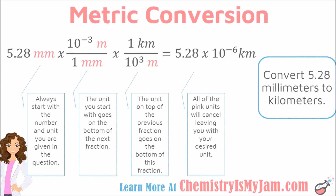So I'm going to go another step. Whenever I set up a new fraction, whatever unit I have at the top of the previous fraction is going on the bottom of my current fraction — that way that unit will cancel. So I had meters here, I've put meters here, and I want to go from meters to kilometers. The conversion factor to go from meters to kilometers is 10 to the third, so there's 10 to the third meters for every one kilometer. You want to multiply by all the numbers on the top and then divide by all the numbers at the bottom. Everything that I have here in pink has canceled, leaving me with kilometers. So my answer would be 5.28 times 10 to the negative sixth kilometers.